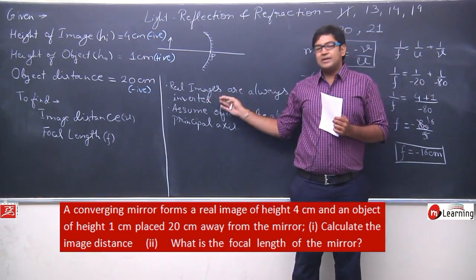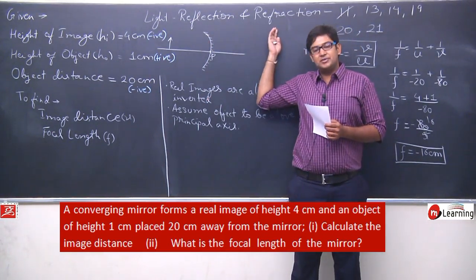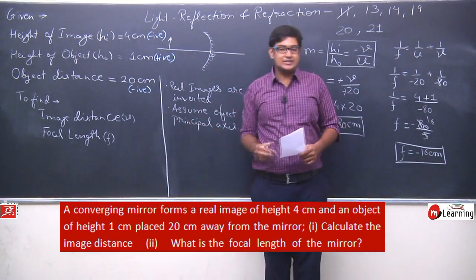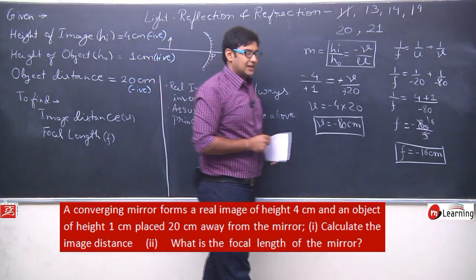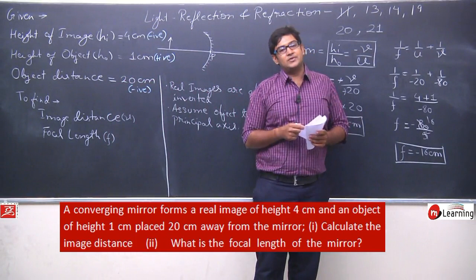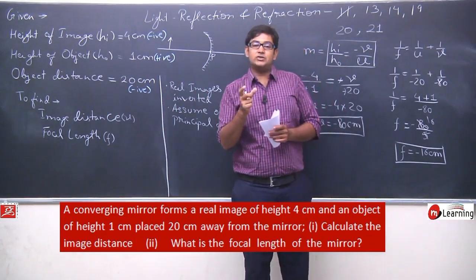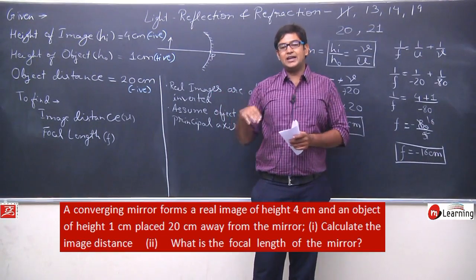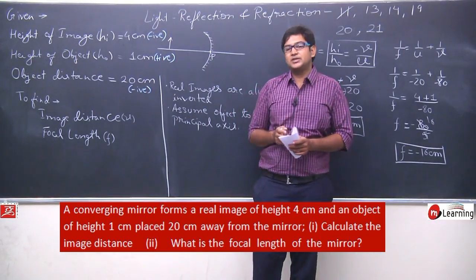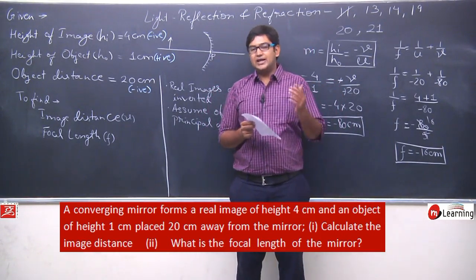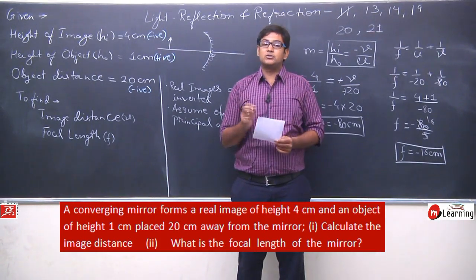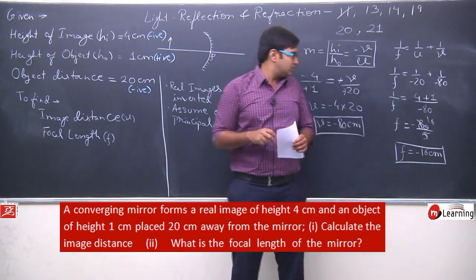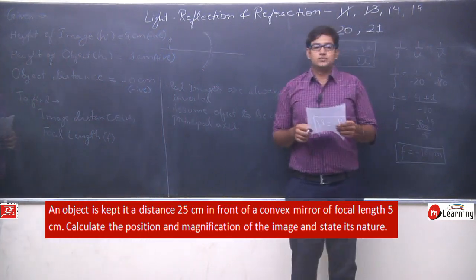Remember: real images are always inverted; virtual images are always erect. Virtual images always form on the right side of the pole; real images form on the left side. Study ray diagrams thoroughly — practice drawing them 2 to 3 times yourself. Mirror formula and magnification formula are important, but ray diagrams are also very very important. This completes question number 13.